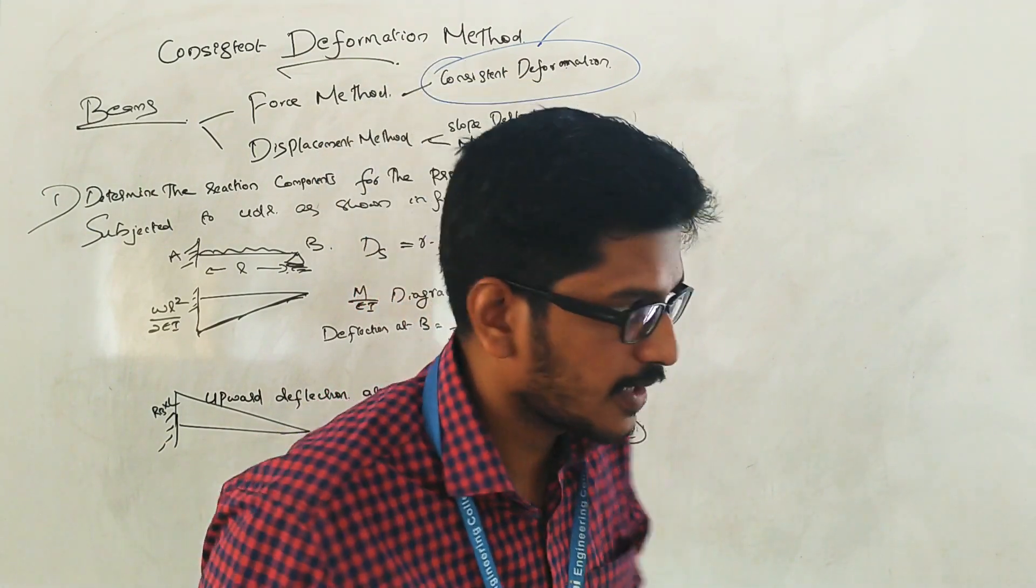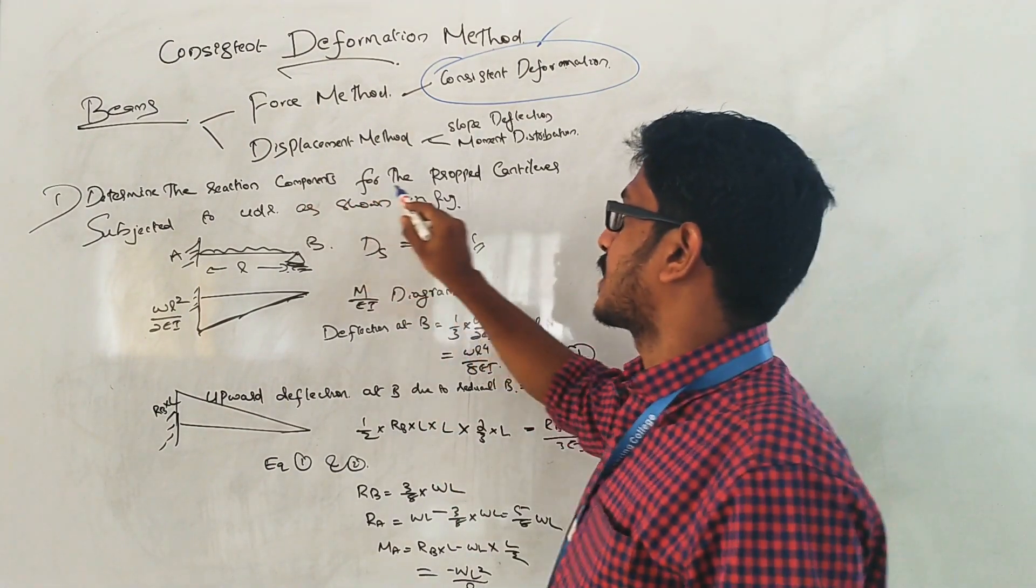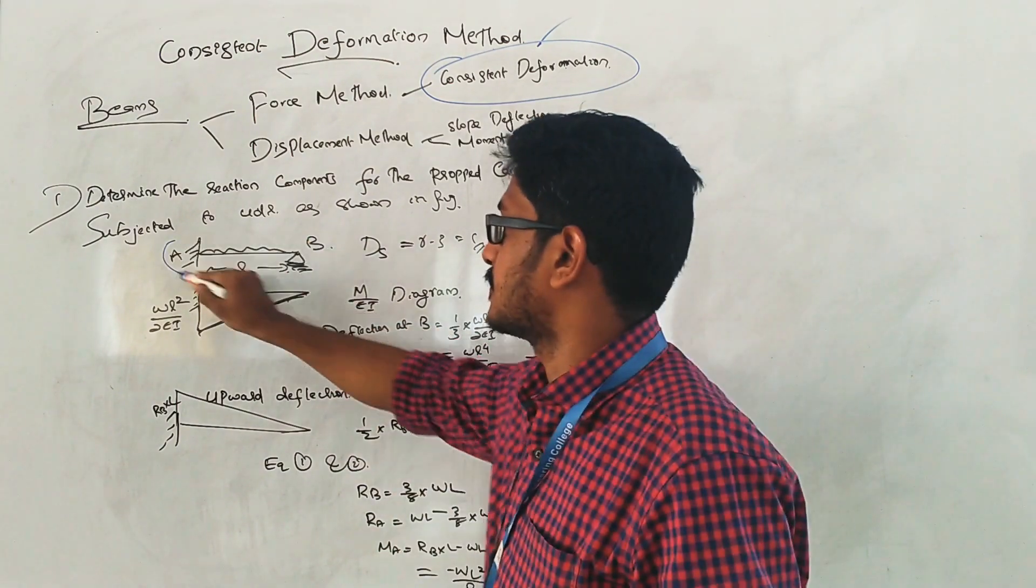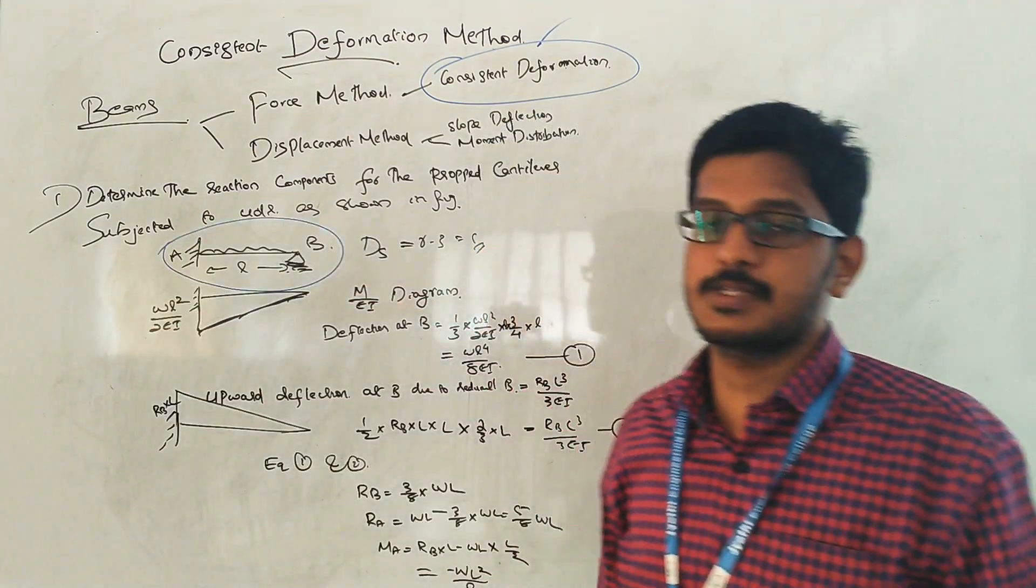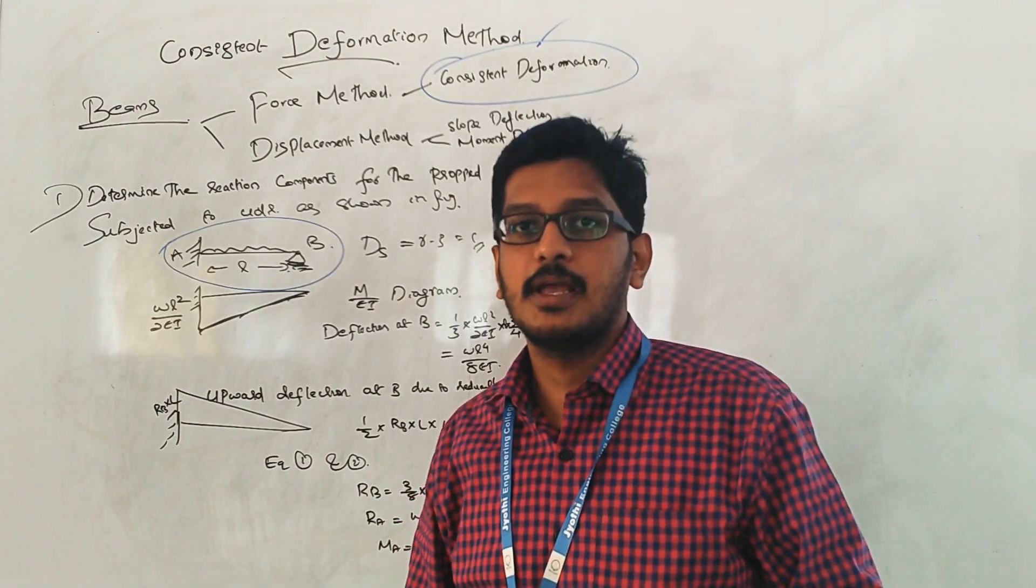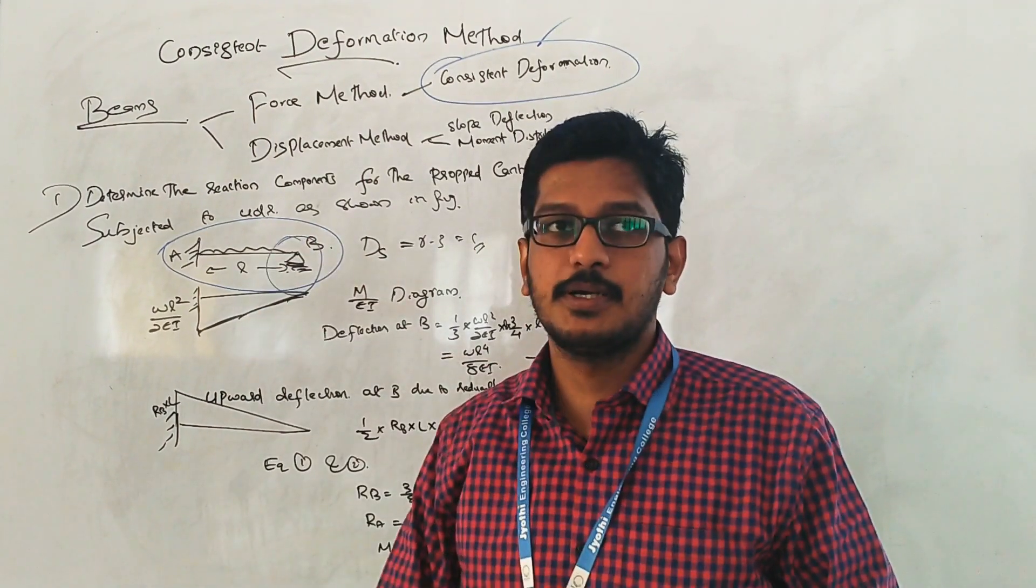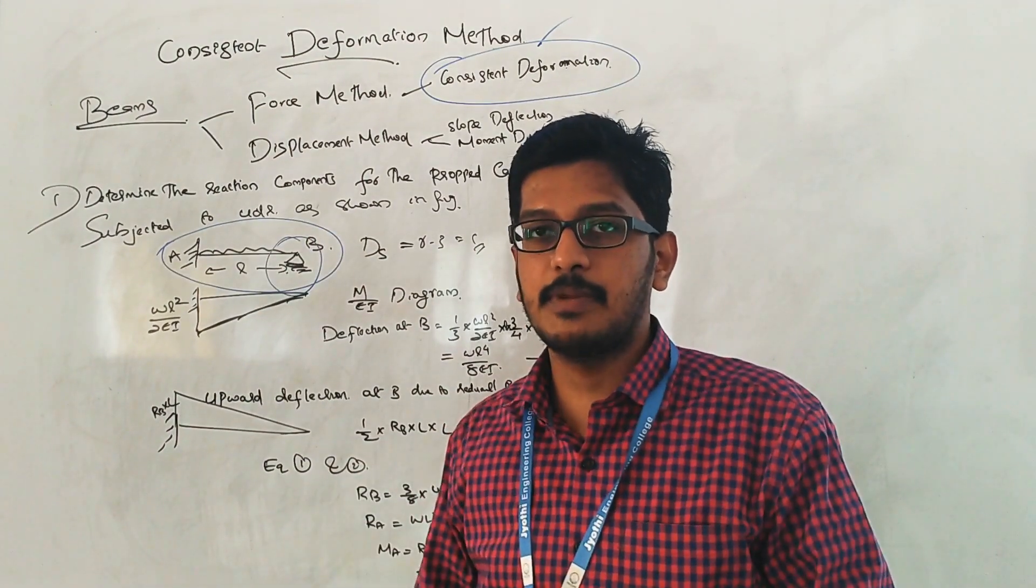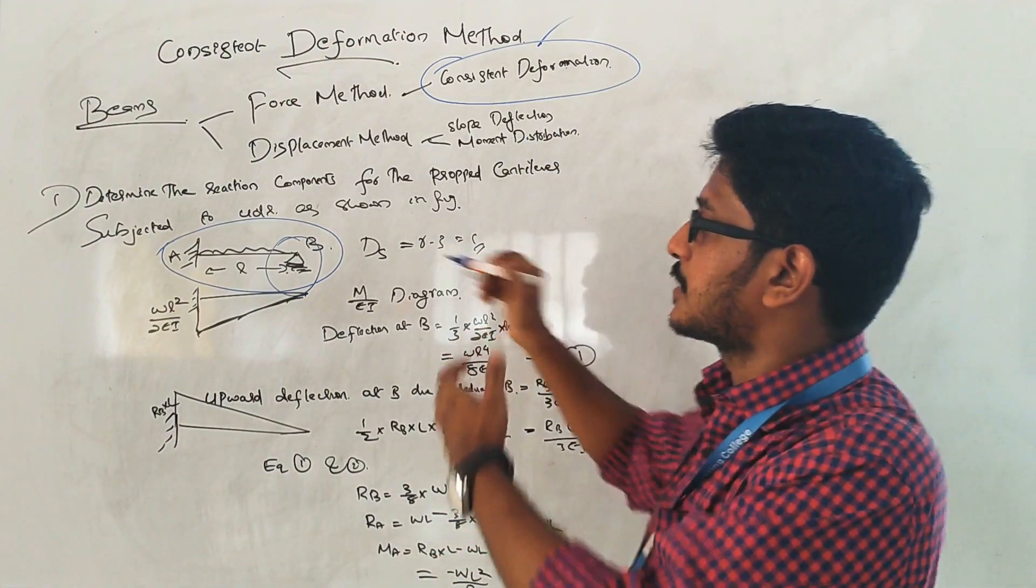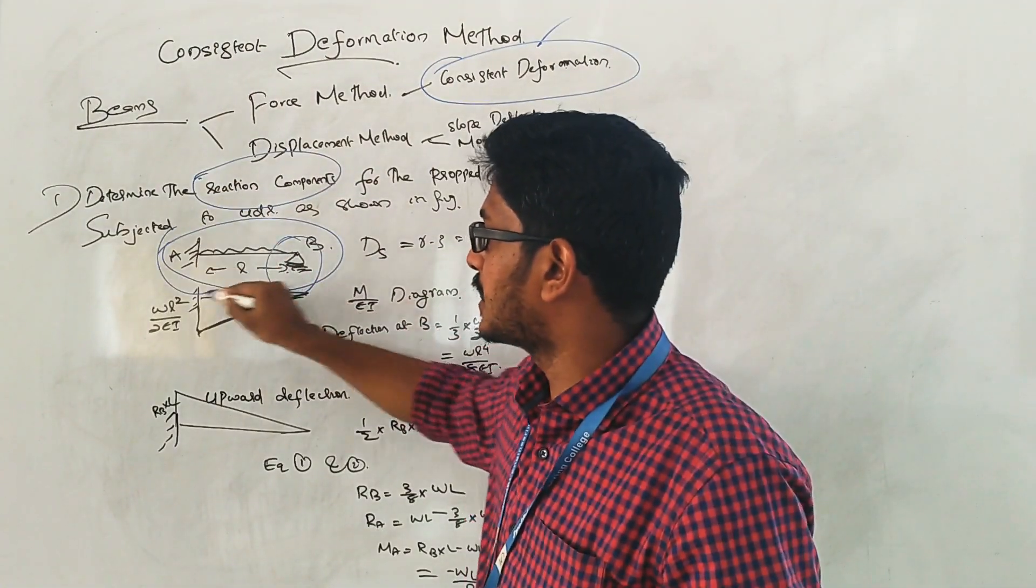Please write down this question: Determine the reaction components for the propped cantilever subjected to the uniform distributed load as shown in figure. In the question it is given that you are given a cantilever beam and at the end there is a roller support, so we can call this beam as a propped cantilever.